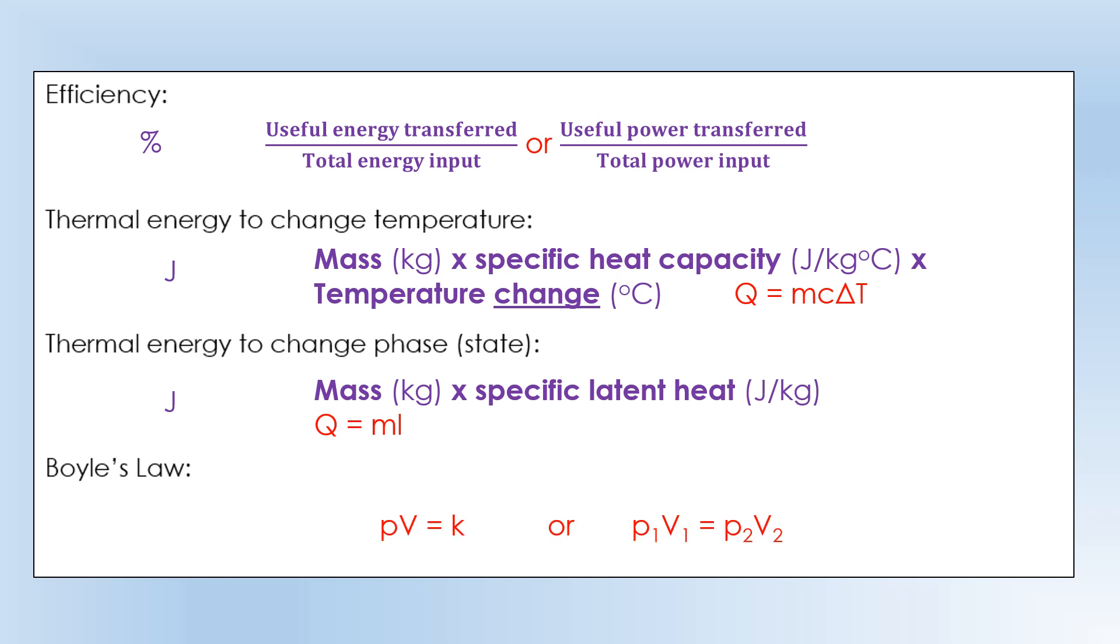Boyle's law is often expressed in two ways. Either saying pressure times volume is a constant, or pressure times volume initially is equal to pressure times volume finally. The key being you can apply Boyle's law when temperature is constant. So you need to know that condition is happening, and then you can apply Boyle's law in these forms.